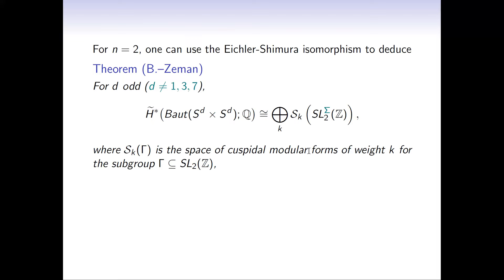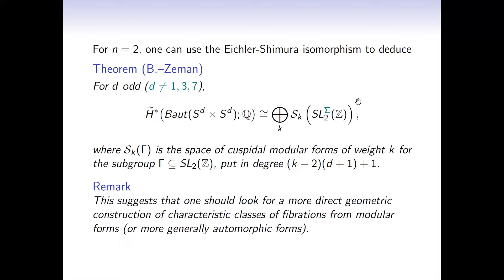With N=2, looking at the product of two spheres S^D × S^D, one gets the cohomology expressed as a sum over K of the space S_K of cuspidal modular forms of weight K for the relevant subgroup—either SL_2(Z) when D is 1, 3, or 7, or the finite-index congruence subgroup otherwise. This gives a very interesting connection to modular forms. This suggests that there ought to be a more direct geometric construction of characteristic classes of fibrations in terms of automorphic forms, a question that could be asked more generally.